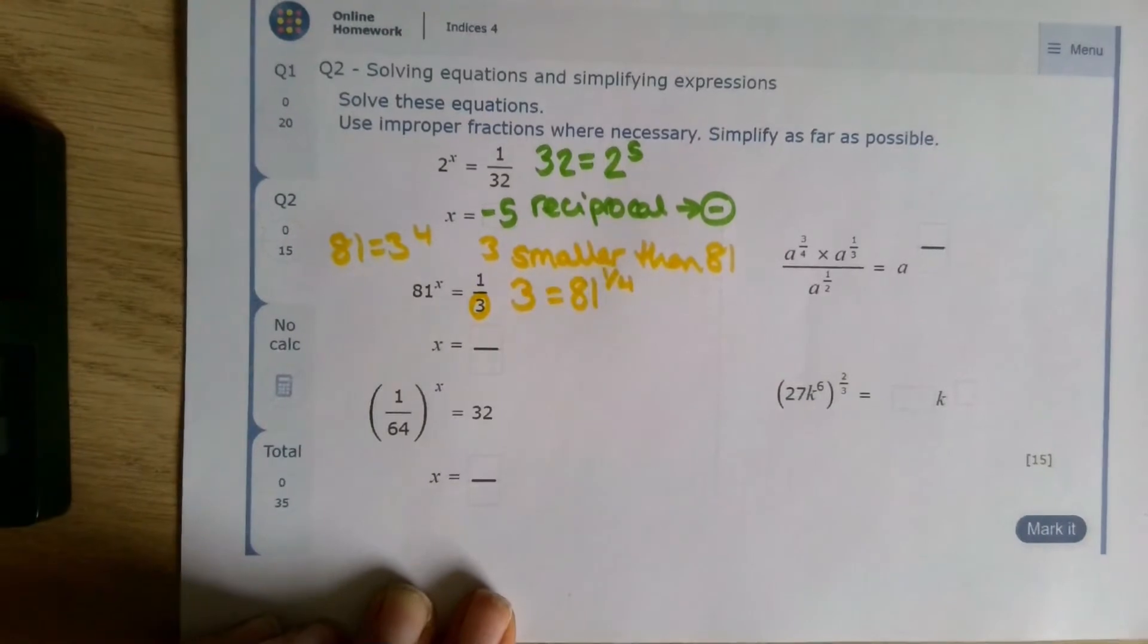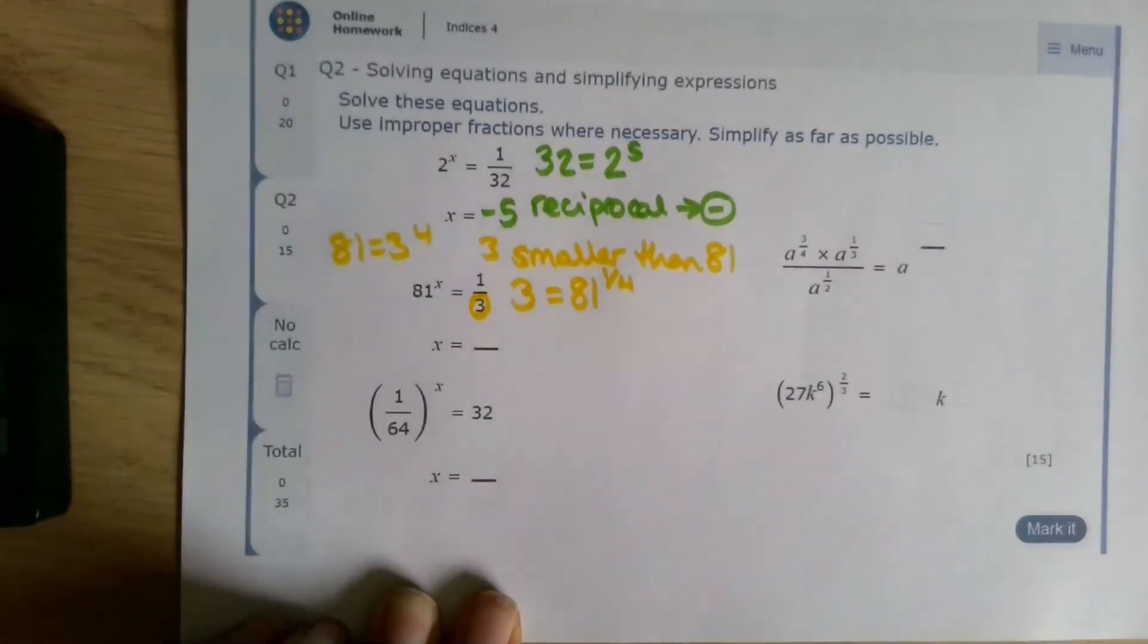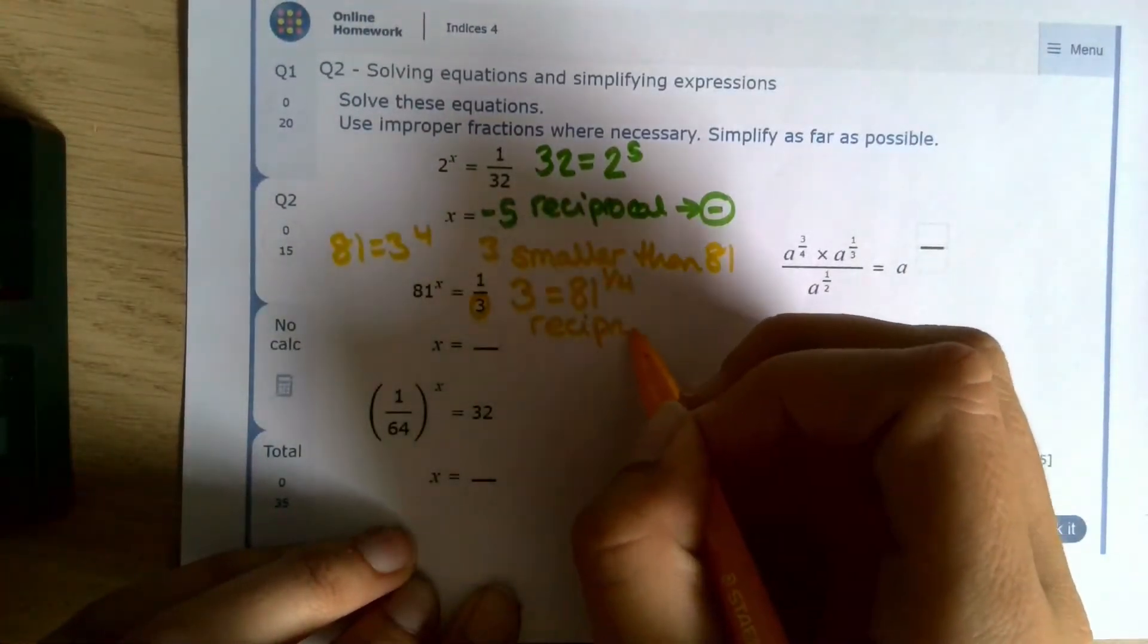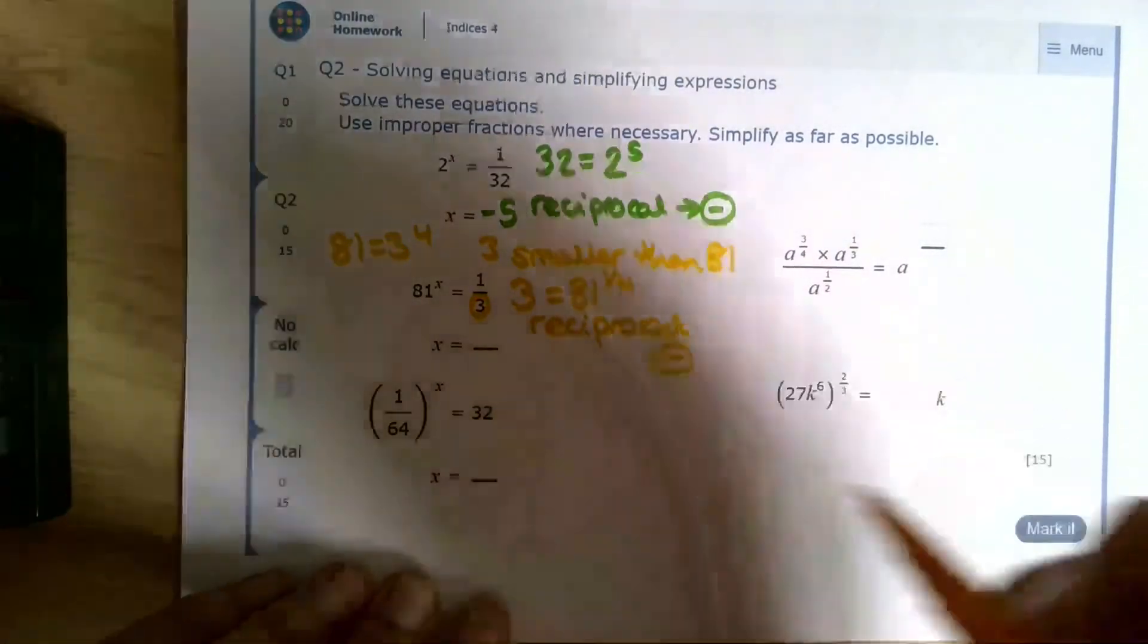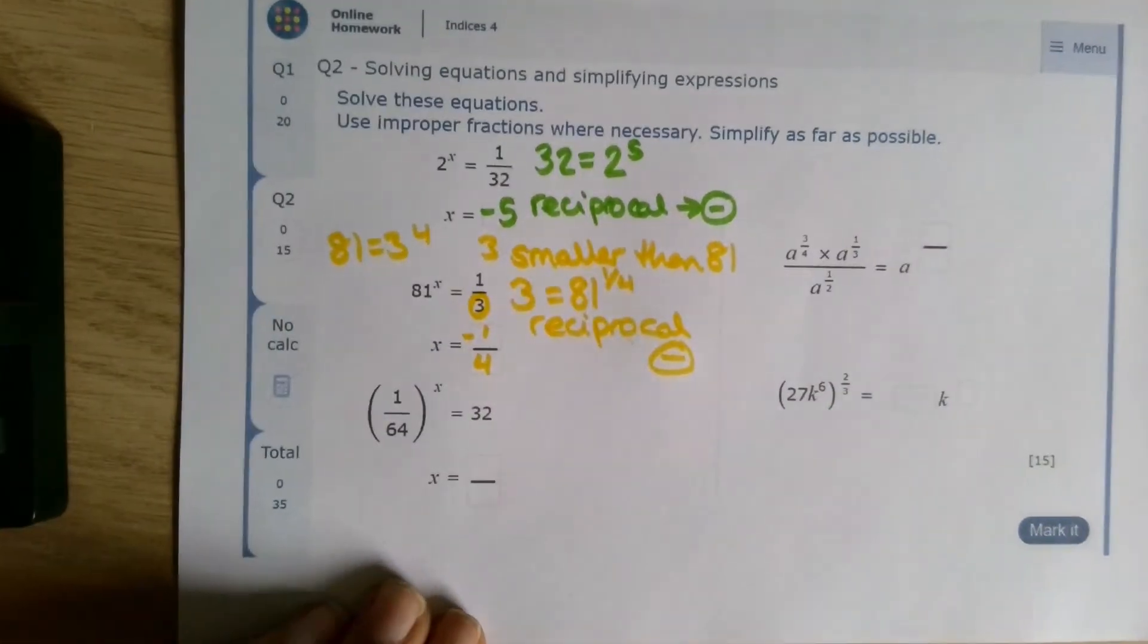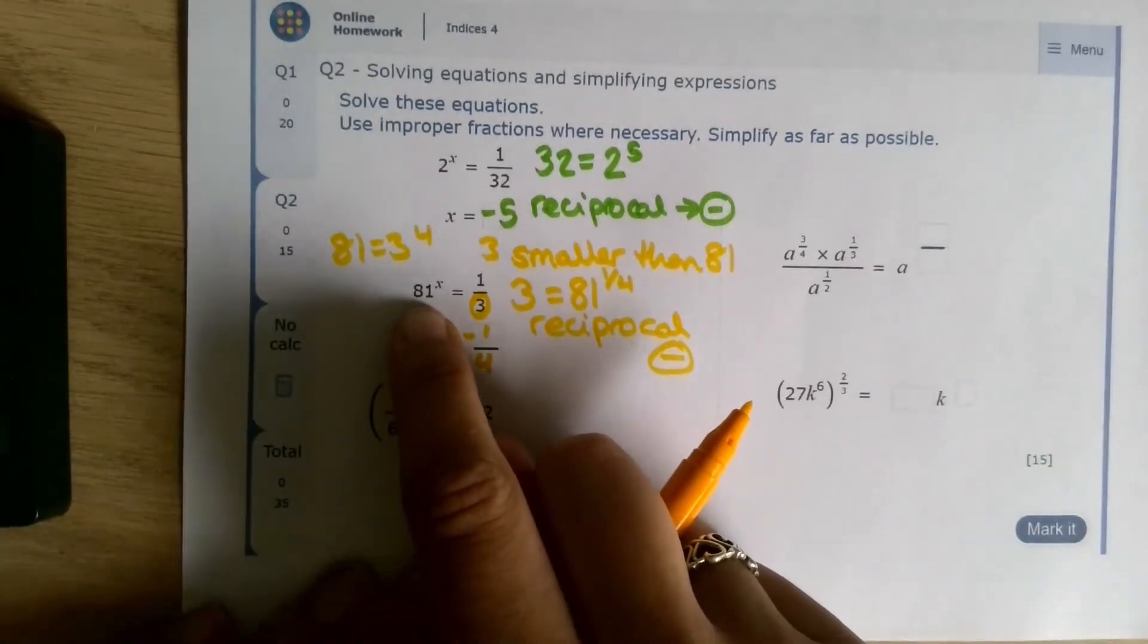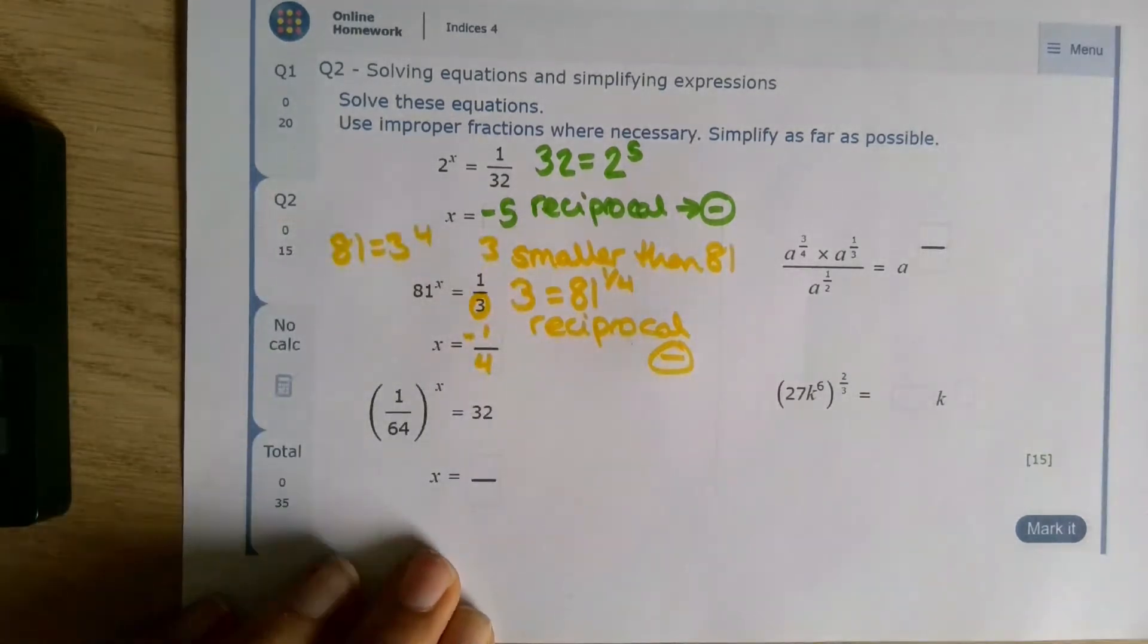We can say that 3 is 81 to the power of a quarter. But this isn't 3, this is 1 third. So it's reciprocal again, which means it's going to be negative. That's going to be the power of negative one quarter. And the relationship there is because 3 is the quarter root, or the fourth root, of 81.